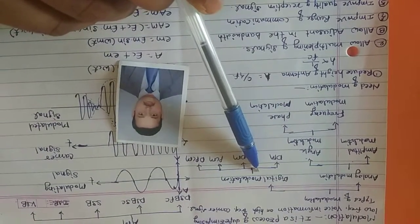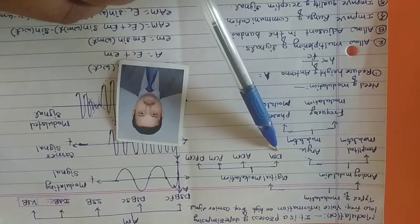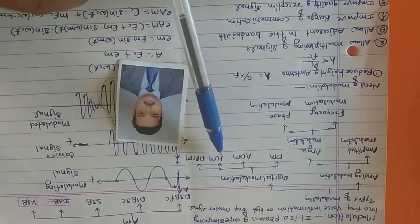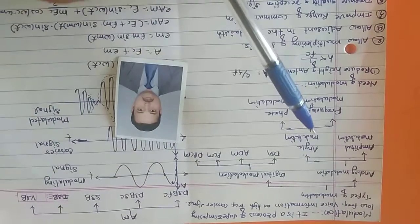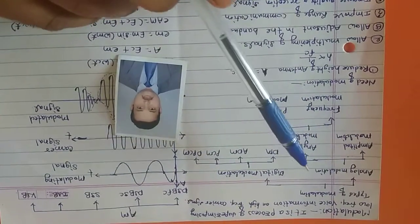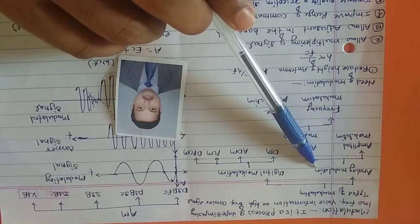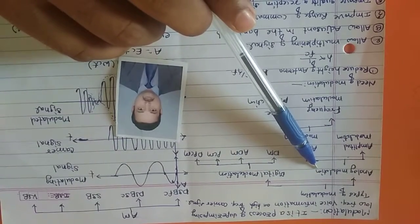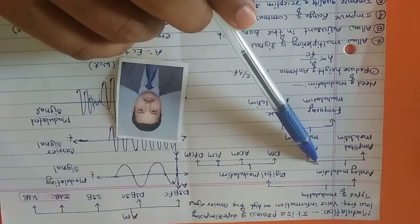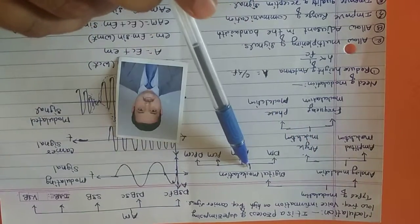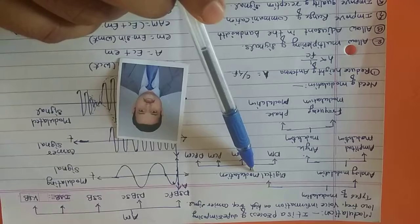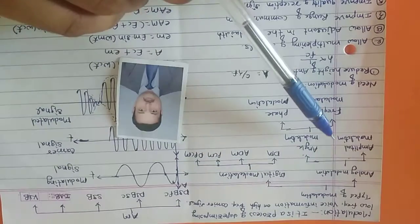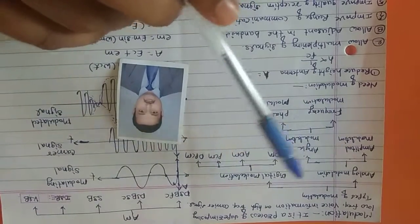Similarly, digital modulation includes delta modulation, adaptive delta modulation, pulse code modulation, and differential pulse code modulation. In analog modulation, the information is in the form of analog signals. In digital modulation, the information is in the form of digital signals. So this is the modulation and these are the types of modulation.